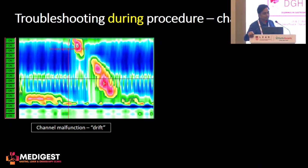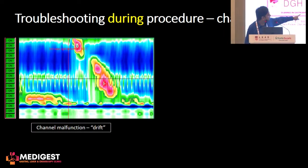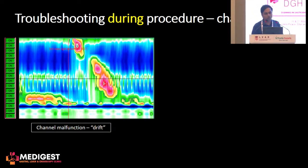Another thing that can happen is that during the procedure you suddenly see that one of the channels is showing an abnormal pressure — for example, a dark blue line at the bottom — meaning that specific channel is not working correctly.